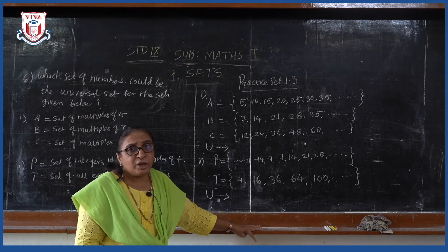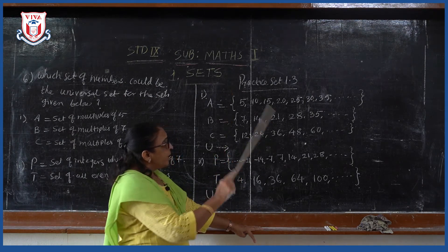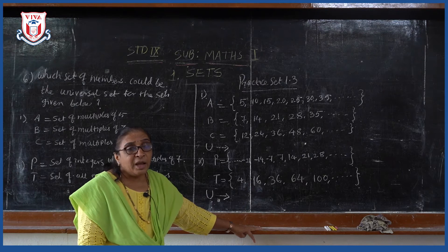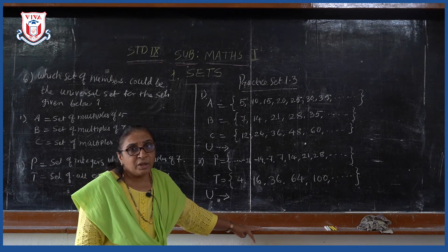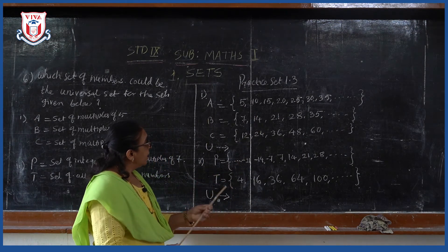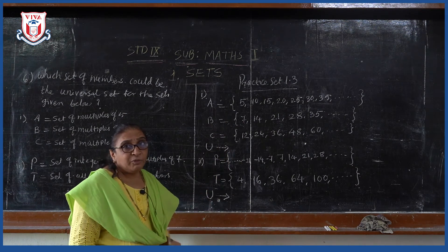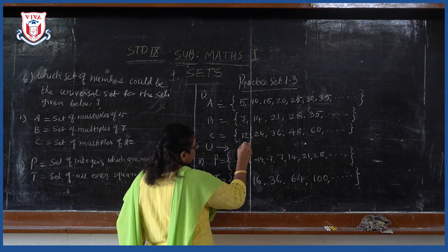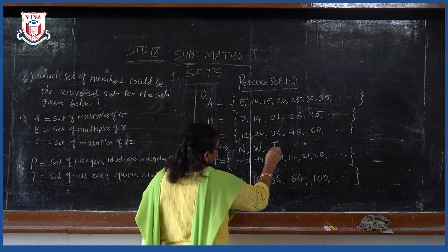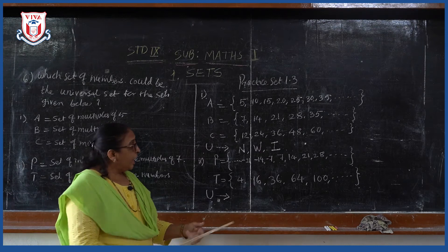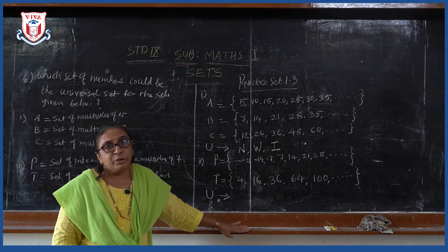Natural numbers: 1, 2, 3, 4, 5, 6 — infinite. All these elements are also coming in the set of whole numbers. So here we can say that the universal set for sets A, B, C will be either a set of natural numbers, set of whole numbers, or set of integers. N will be the universal set, W may be the universal set, I may be the universal set.